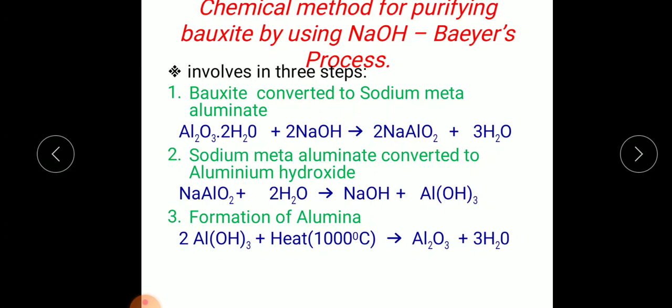Now in the second step, this sodium metaaluminate is converted to aluminium hydroxide by reacting with water. So sodium metaaluminate when you react with water, it forms sodium hydroxide and aluminium hydroxide.